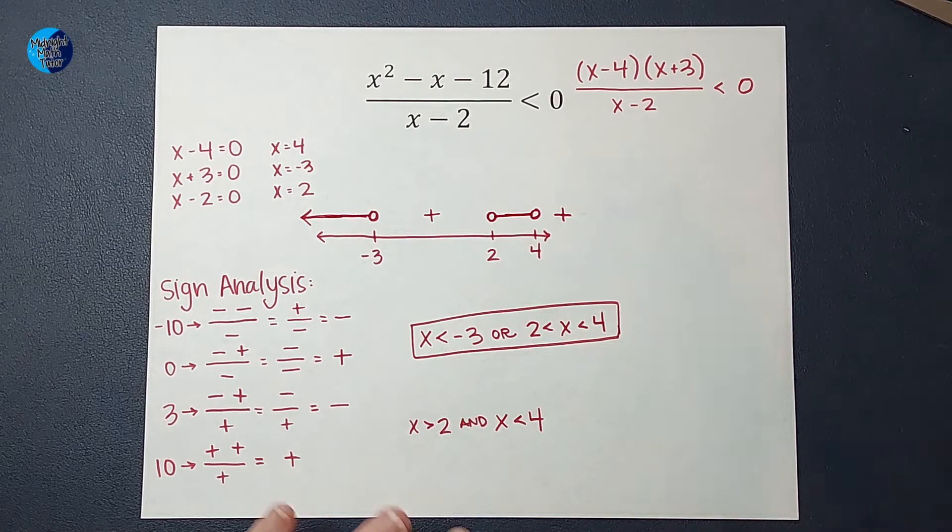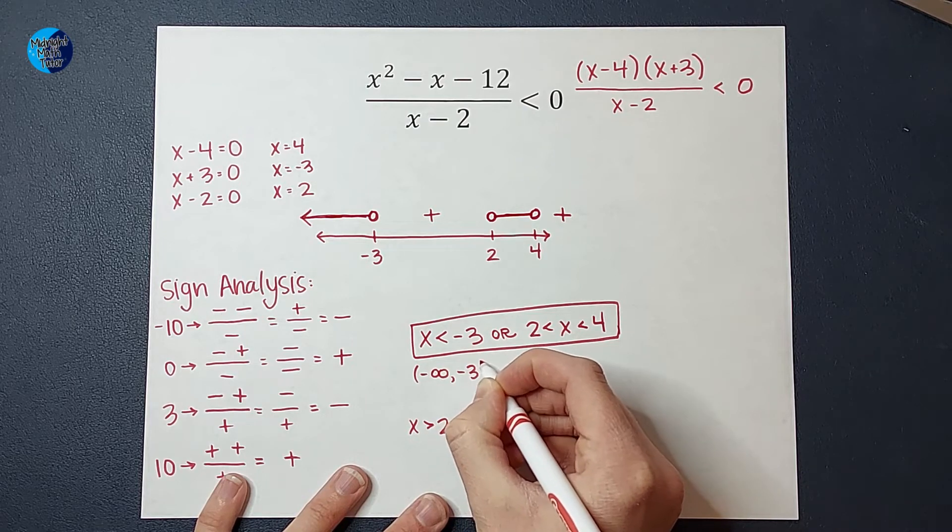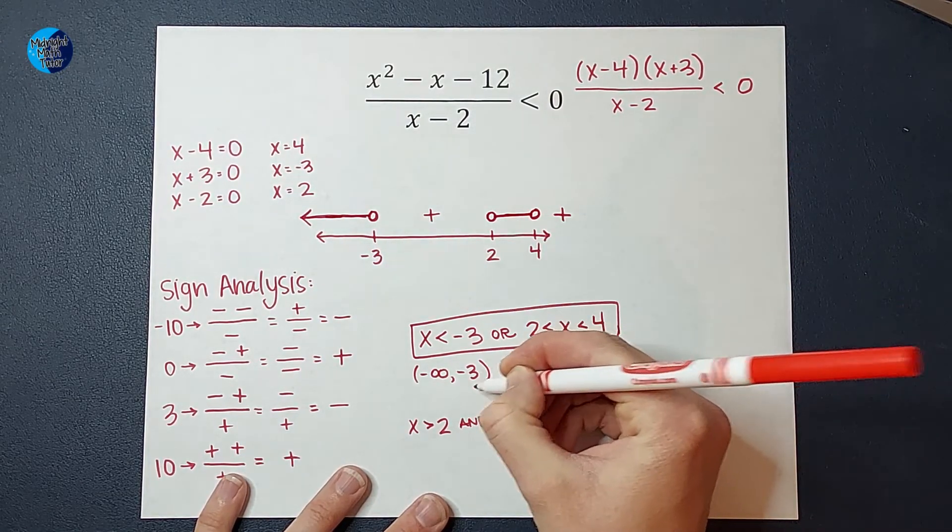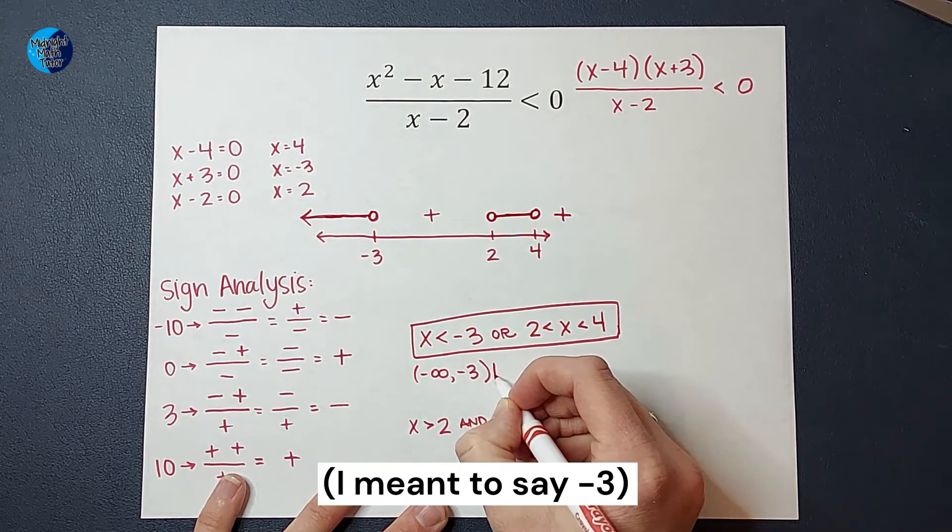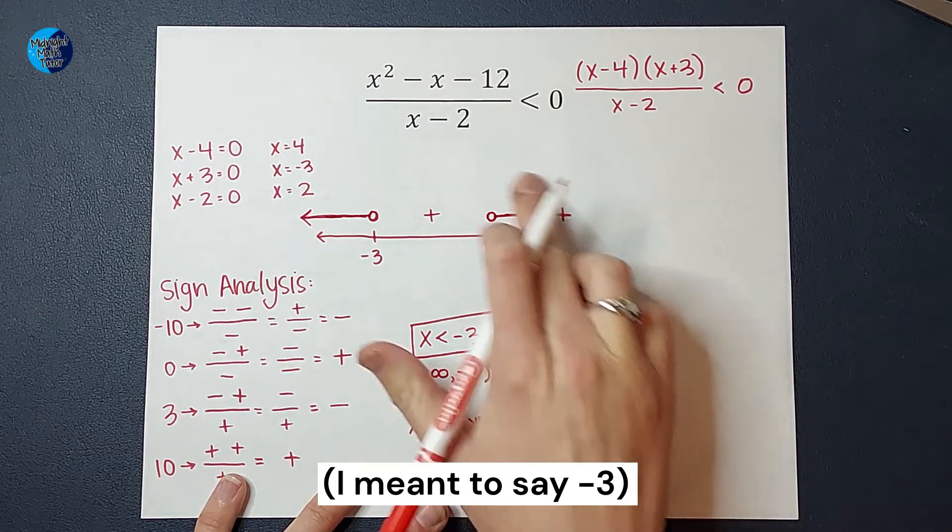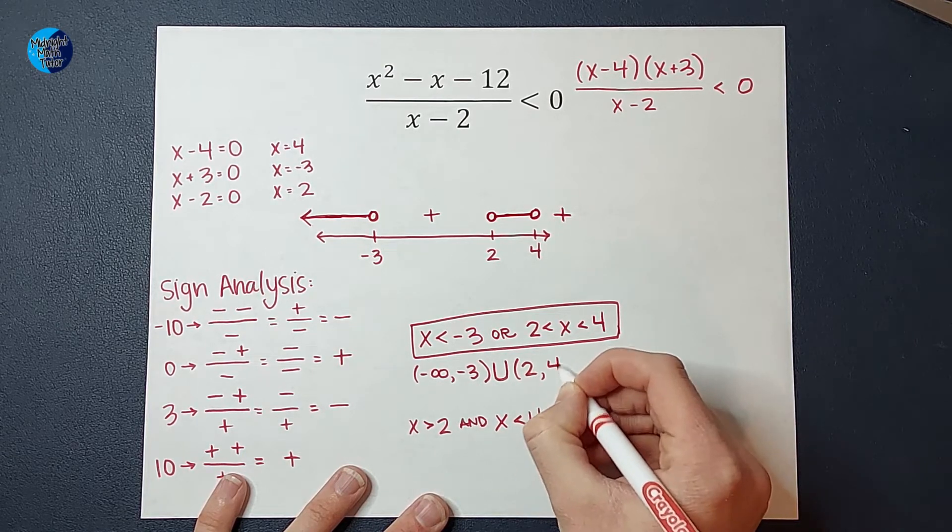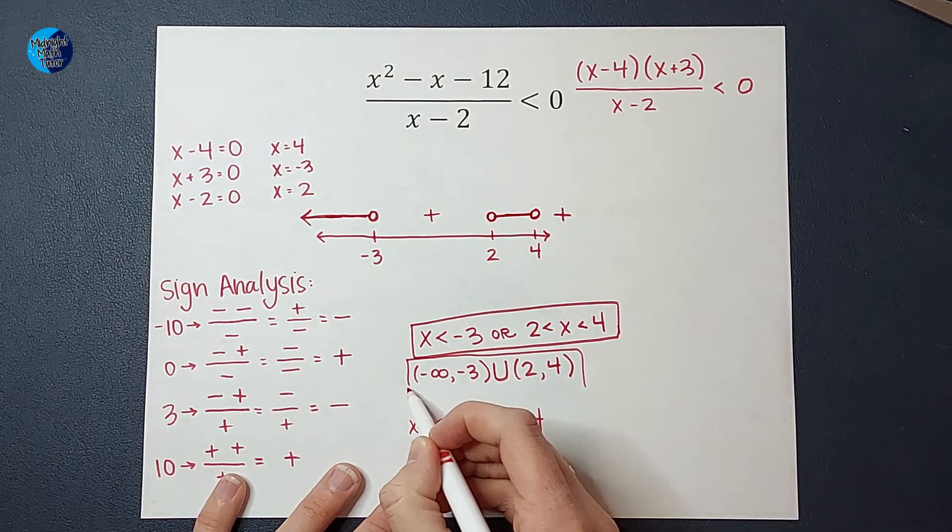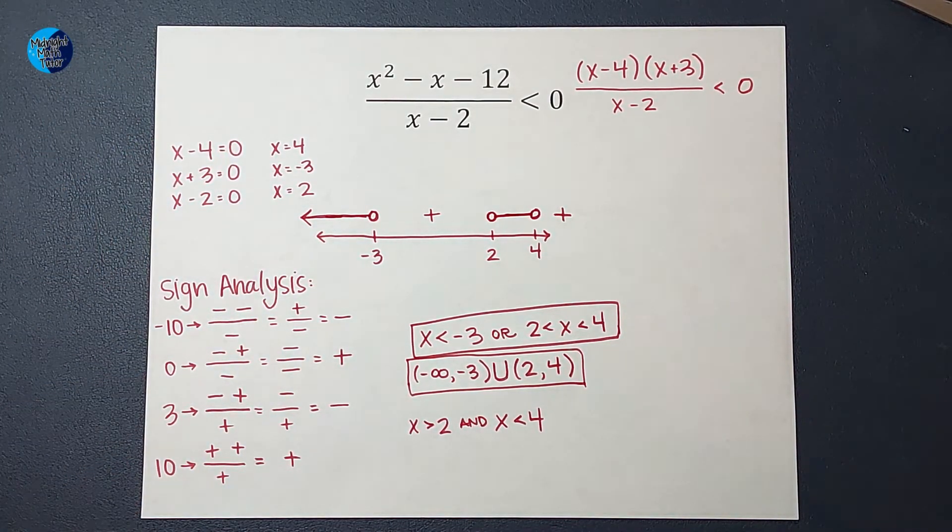If I wanted to write it in interval notation, we'd say pick a number from negative infinity to -3. Negative infinity always gets a parenthesis. -3 gets a parenthesis because of the open circle. If that were a closed circle, I would use a bracket. So I can pick a number from negative infinity to -3, or I'm going to use the U for union, meaning that's together with this guy, which in interval notation we would represent as (2, 4). Both of those get parenthesis because of the open circles. So those two answers are the same, just in different forms.